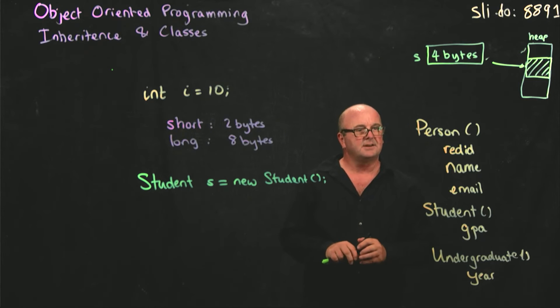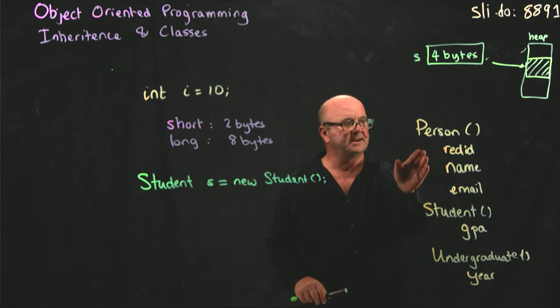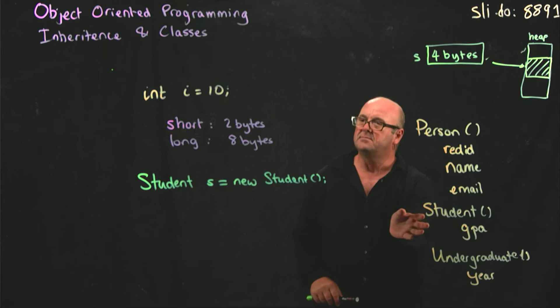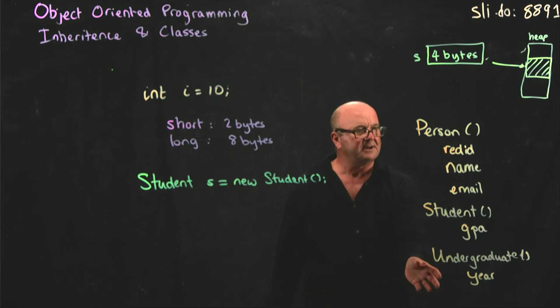So instead of having students where I have red ID, name, email in my student class and having to copy all that code. And instead of having undergraduates where again I copy all of that code. What I can do is I can set up a situation where I say, you know what, students are people too. Well, most of them.